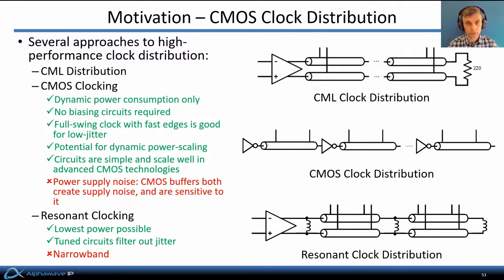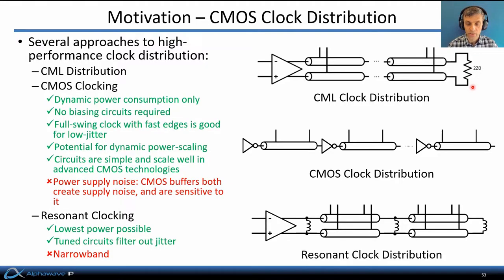There are a few common ways to distribute a CMOS clock across the SerDes macro. The most traditional approach is CML (current mode logic) clock distribution, where a clock is distributed differentially across a controlled impedance on-die transmission line terminated with its characteristic impedance, to ensure that the traveling wave clock maintains its amplitude.